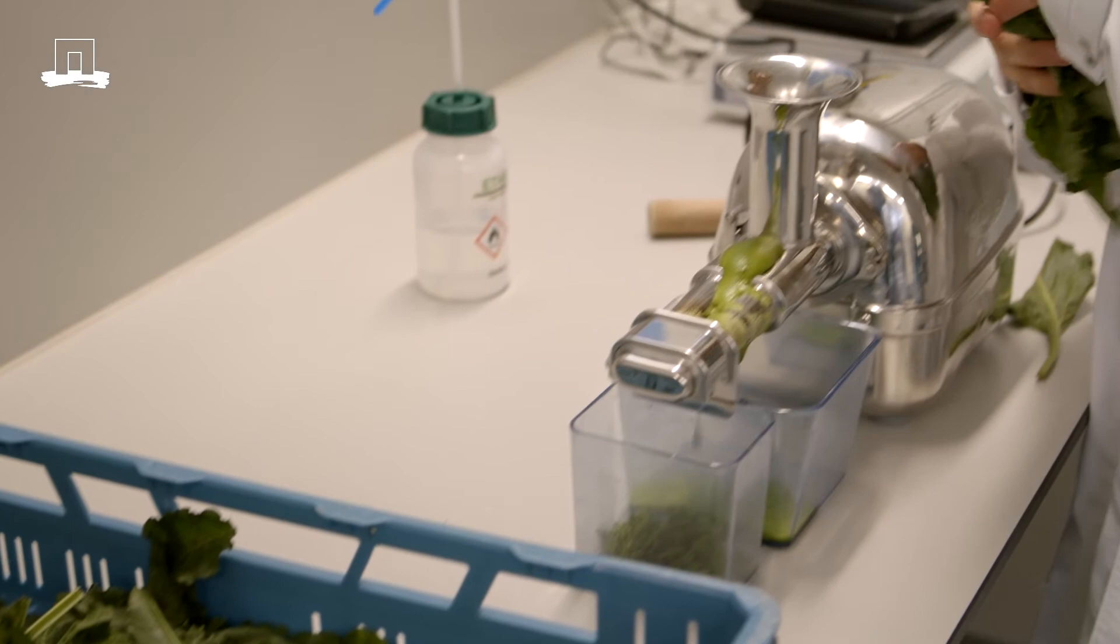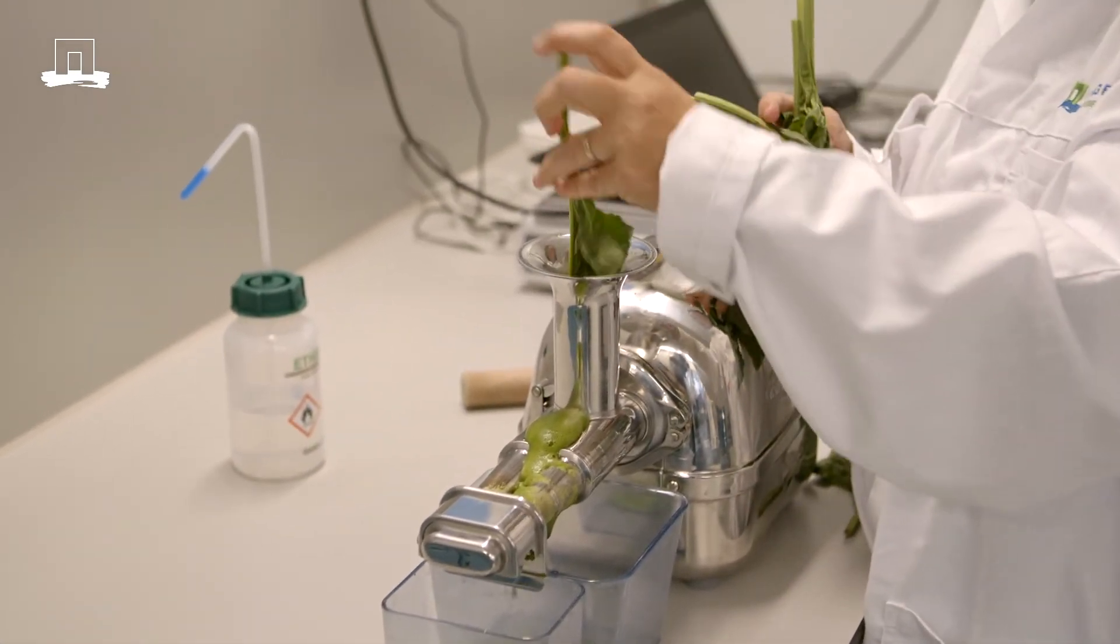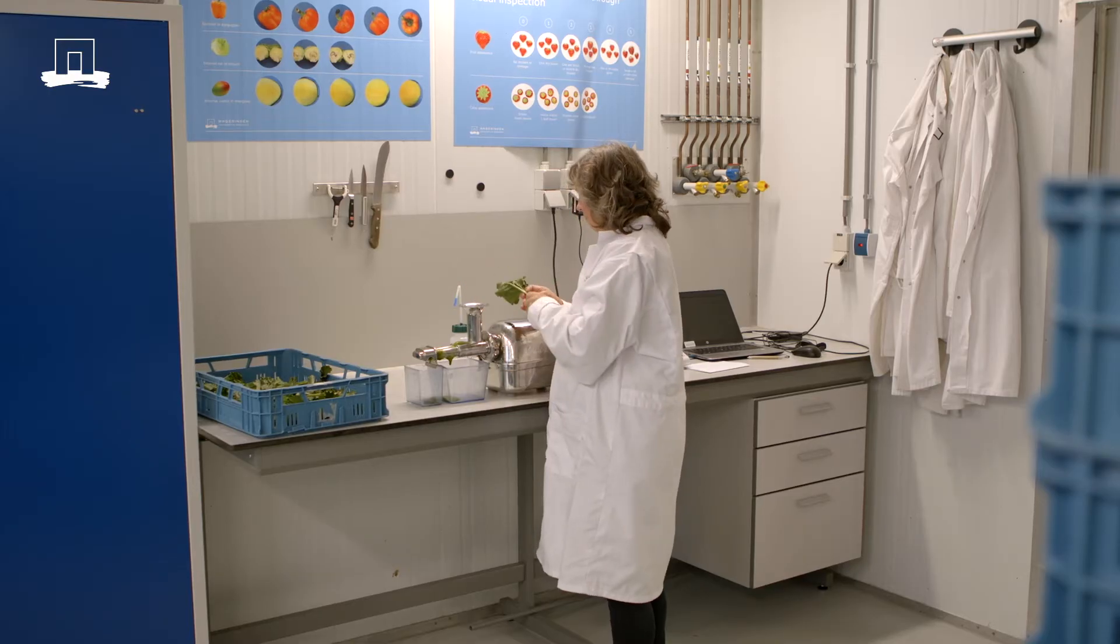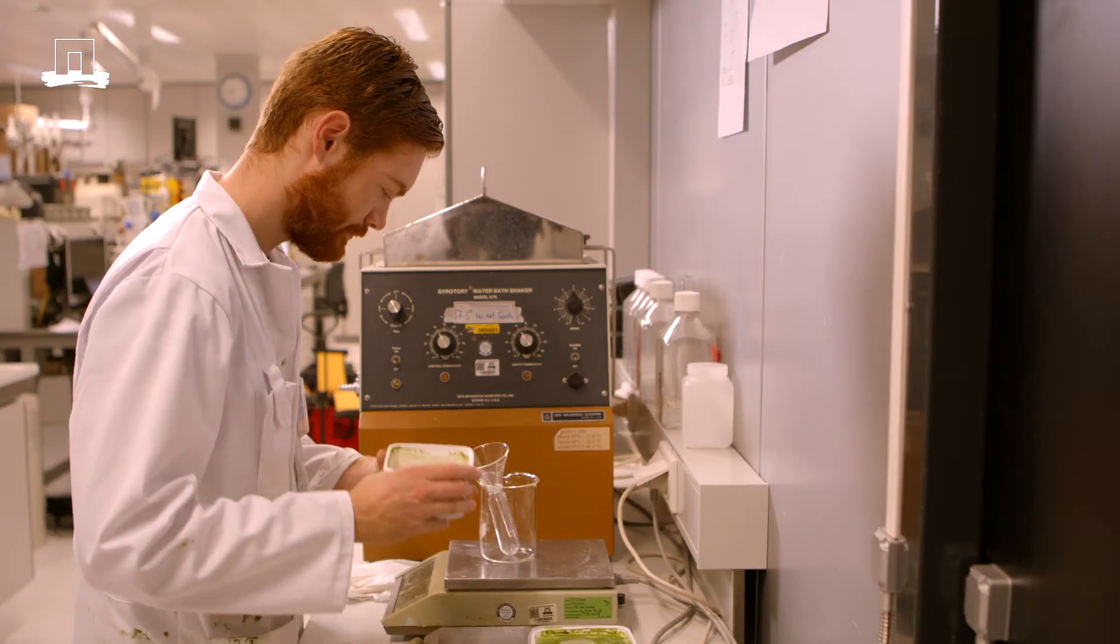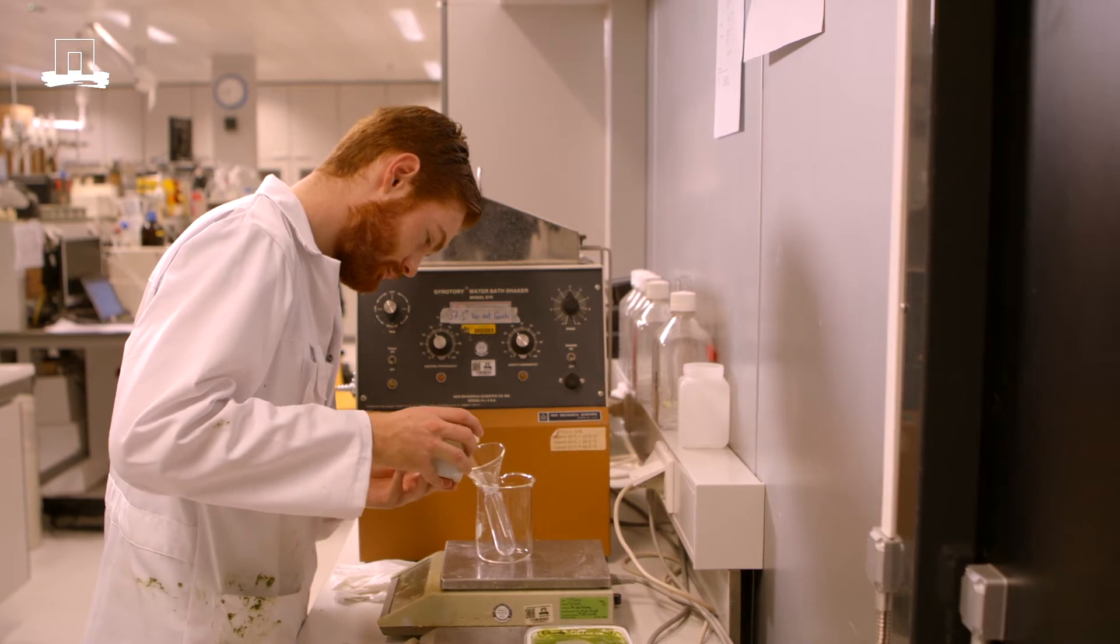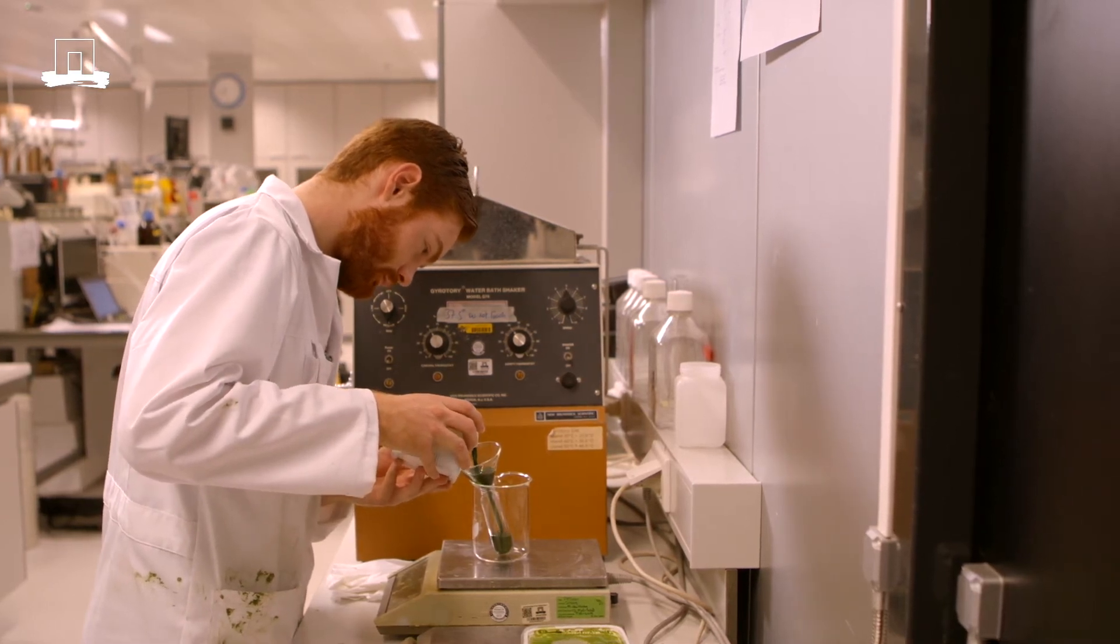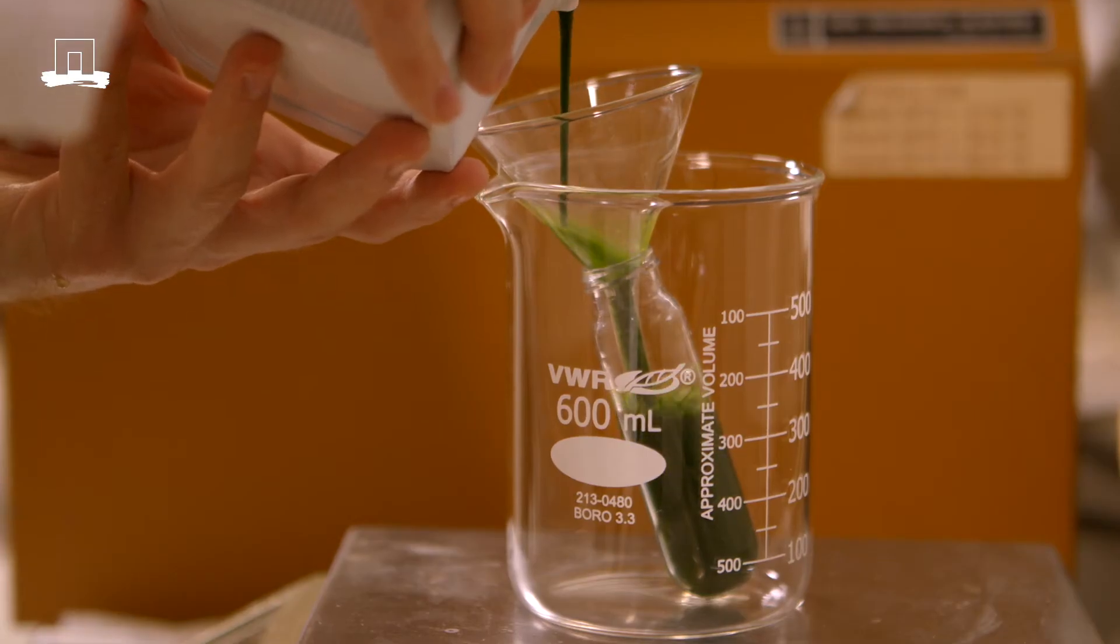To see how successful the proteins can be extracted after storage under different conditions, we press the material and collect the juice. We measure the amount and draw up a mass balance. The juice, containing also the Rubisco protein, will be analysed on protein content.